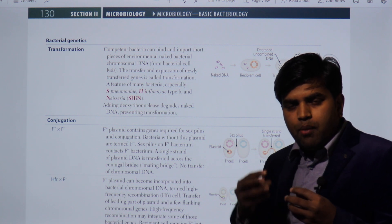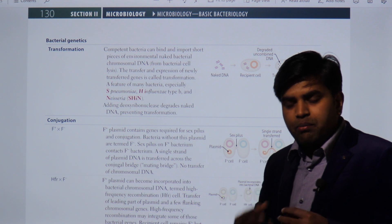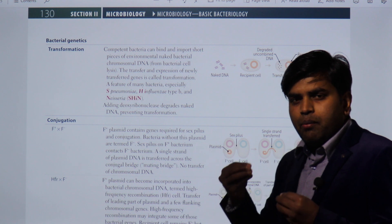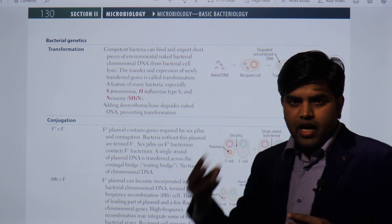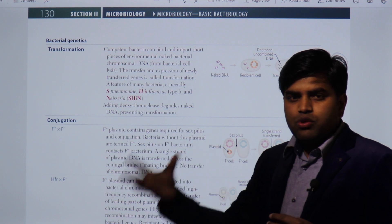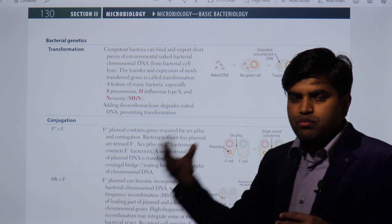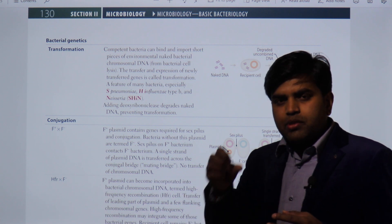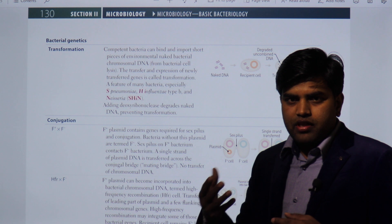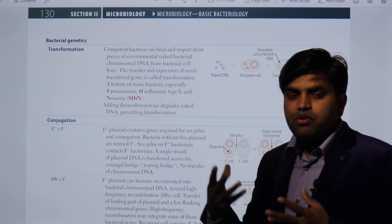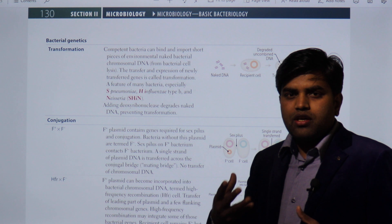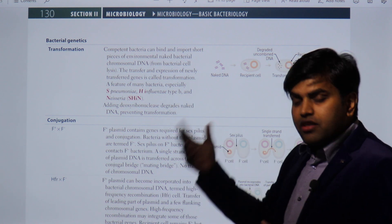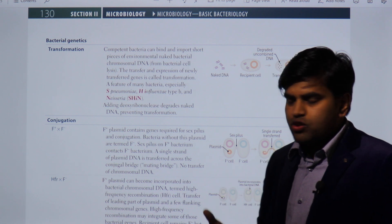Transformation is the process by which a bacterium becomes transformed by picking up naked DNA from the environment. Suppose a highly pathogenic bacterium dies and its genetic material is exposed and disintegrates into the environment. Then a normal, non-harmful bacterium picks up that genetic material, becomes powerful, and transforms into a pathogenic organism that can infect and make us sick.